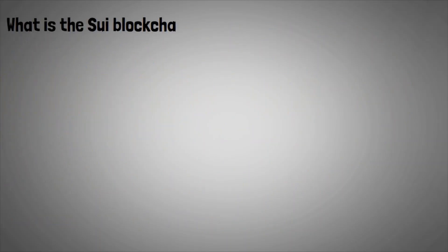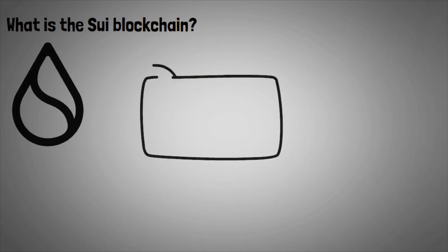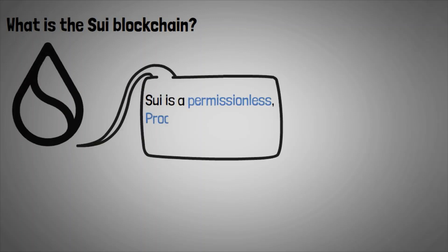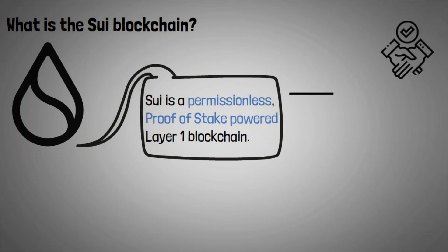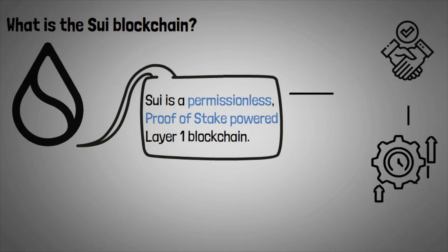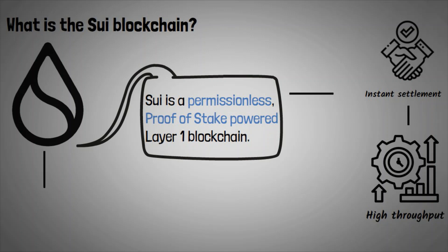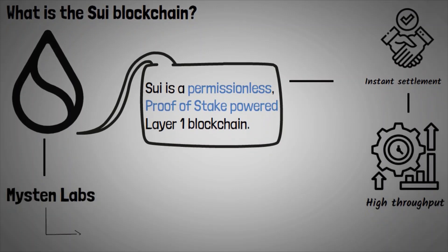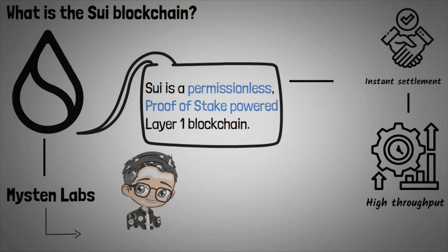The Sway blockchain is a permissionless, proof-of-stake-powered Layer 1 blockchain that has been designed to provide instant settlement and high throughput, as well as empower a multitude of next-gen, latency-sensitive decentralized applications. The Sway blockchain is the brainchild of Misson Labs, an R&D company founded by former senior executives at Meta's Novi Research, and lead architects of the DM blockchain and MOVE programming language.